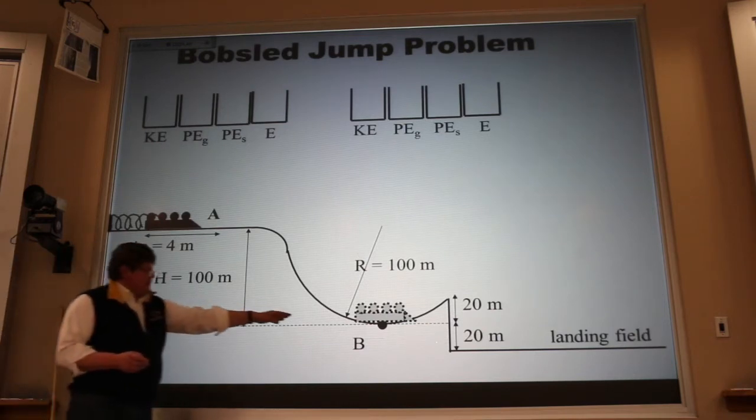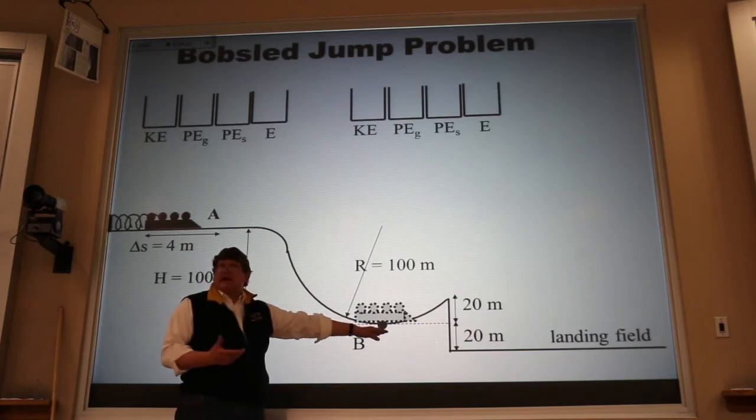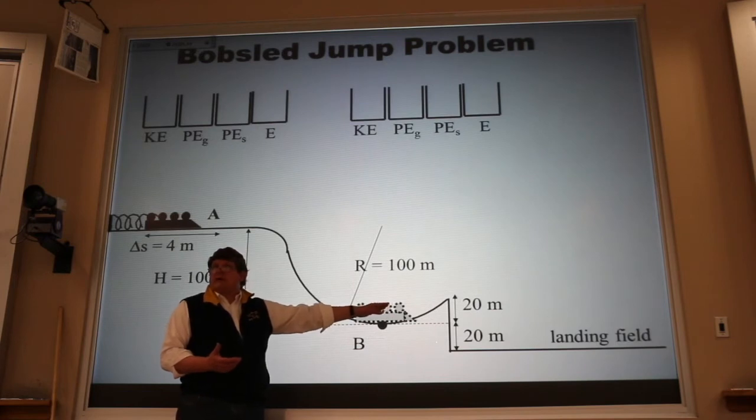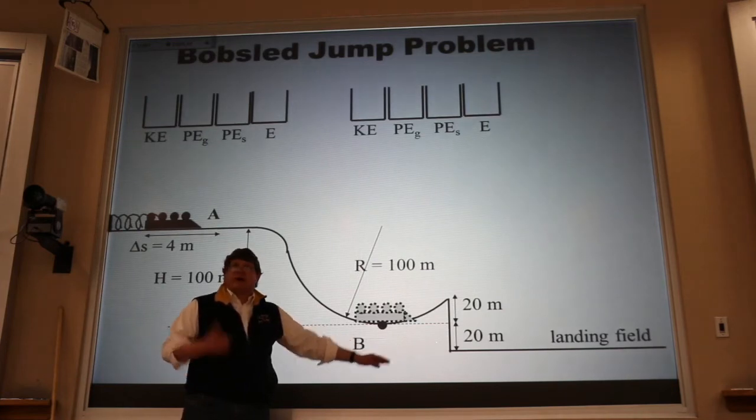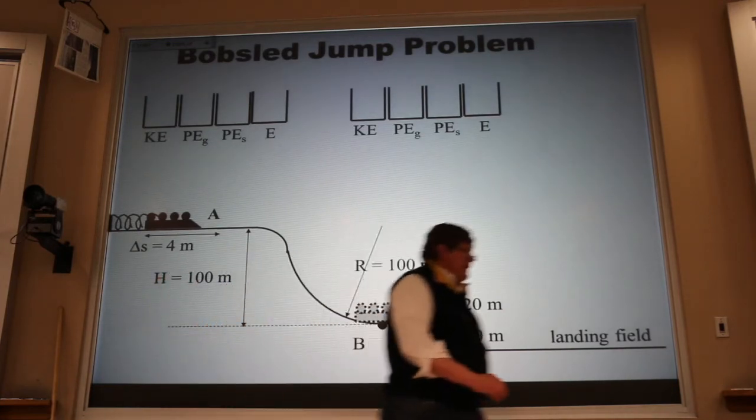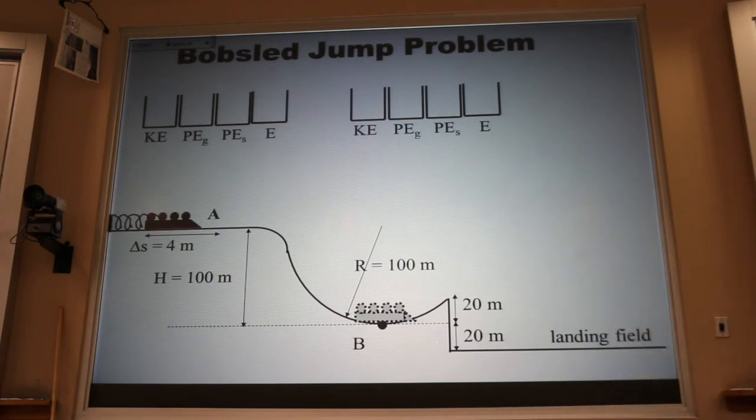Then I go to my final event and I ask the same questions. Is anything with mass moving? Yeah. 50 meters per second. Is anything up off the floor? Yeah. 20 meters up off the floor. Are any springs stretched or compressed? Not anymore. So the buckets that are filled are gravitational and spring to begin with. Since there's no external work, the energy is conserved. And now that energy is kinetic and potential gravitational.